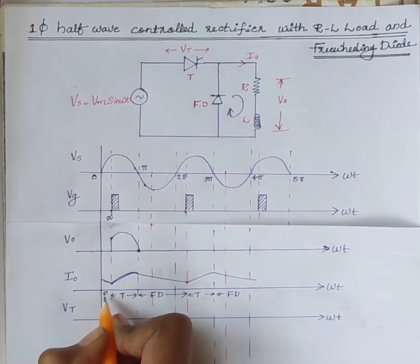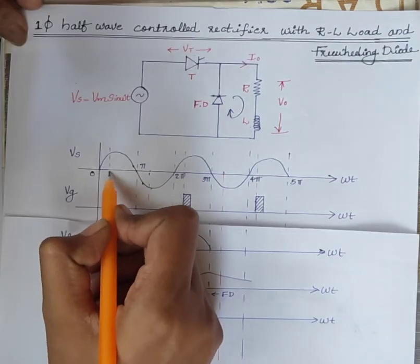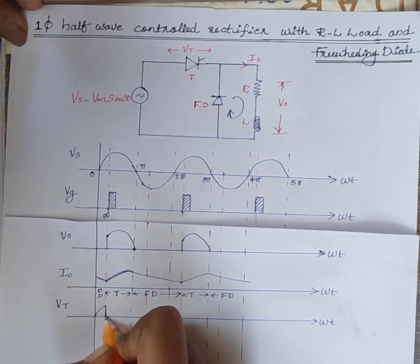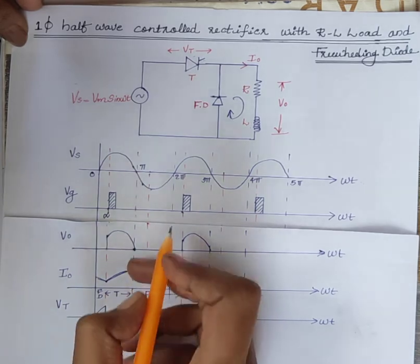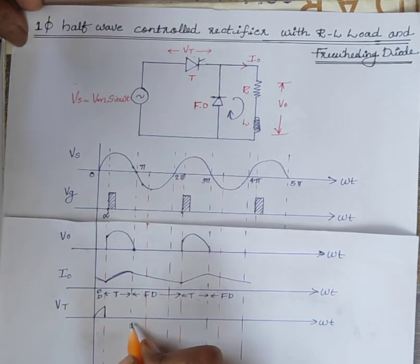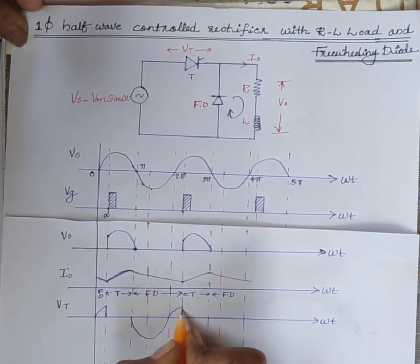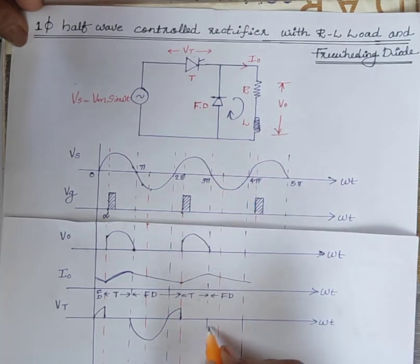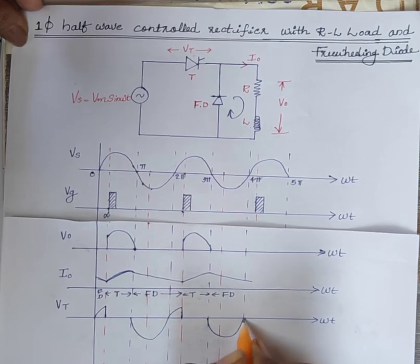Here, output current flows through the freewheeling diode. From 0 to alpha, the supply voltage appears across the thyristor. This portion appears across the thyristor. And from pi to 2pi plus alpha, the output voltage appears across the thyristor. Again, from 3pi to 4pi plus alpha, the output voltage appears across the thyristor.